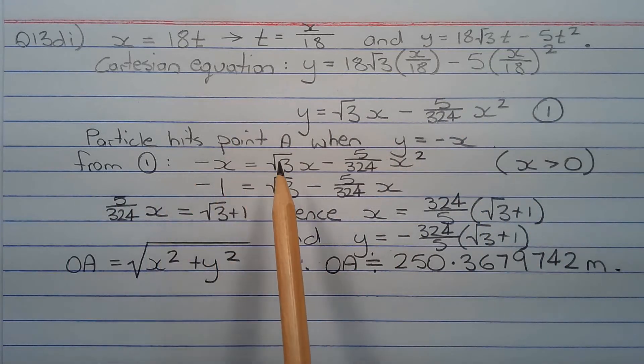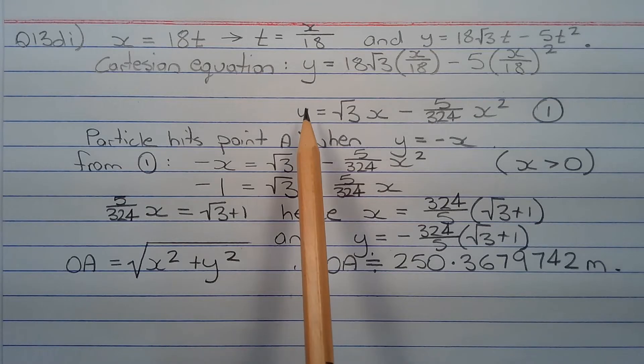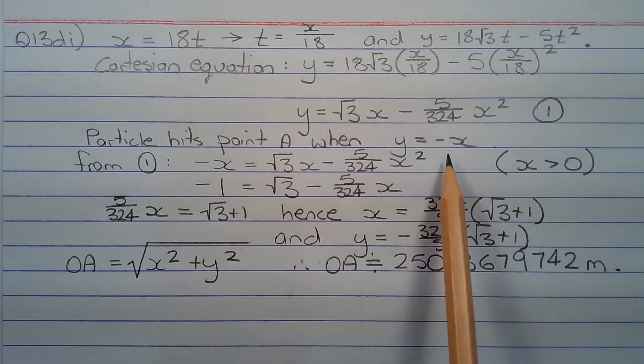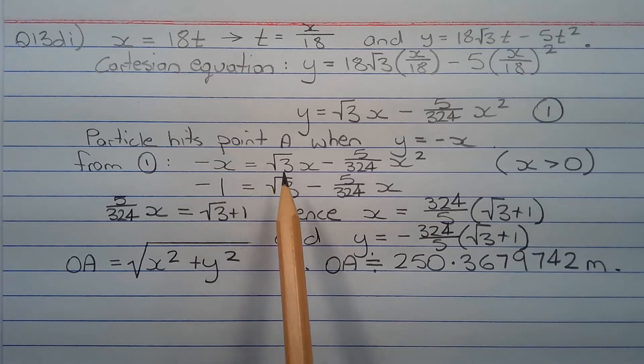Now the particle hits point A when y equals negative x. So from equation number one, I'm going to replace the y with negative x. I'm going to solve this equation for x. So negative x equals root 3 times x minus 5 over 324 times x squared.